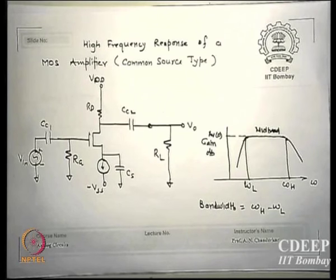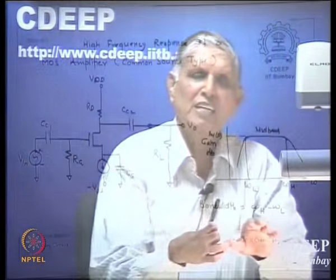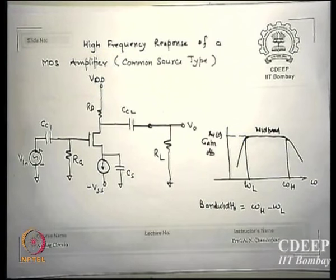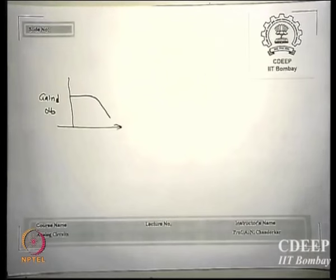I am clarifying this because books sometimes change terminologies — from FET to bipolar, from one notation to another. So I wanted to clarify what I mean when I write these terms. You may call them FL and FH or ωL and ωH — it does not matter as long as you understand the concept. This is just a nomenclature system.